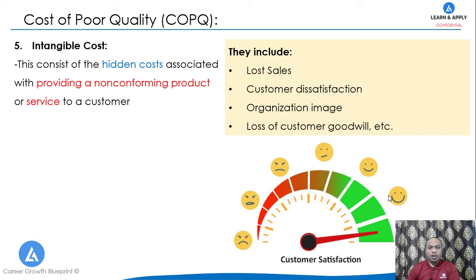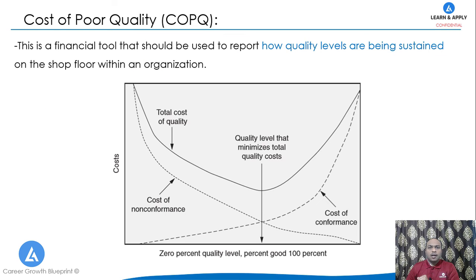The last cost of poor quality is intangible cost. This consists of hidden costs associated with providing a non-conforming product or service to the customer. This category includes costs associated with lost sales, customer dissatisfaction, organization image, as well as loss of customer goodwill.